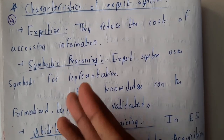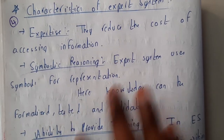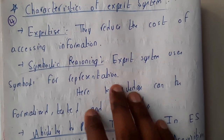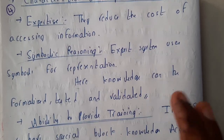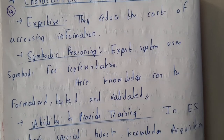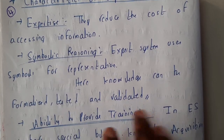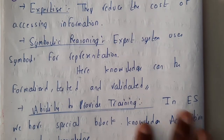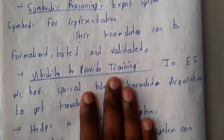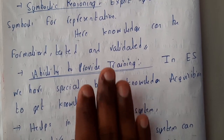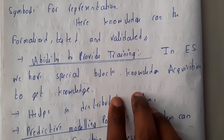The next characteristic is symbolic representation or symbolic reasoning. In expert systems, all the facts — everything — is represented in the form of symbols. This helps in formation, and testing is also faster. Validation is also done really faster because of this symbolic representation.